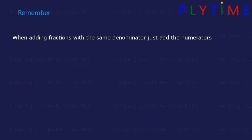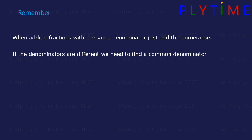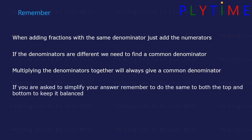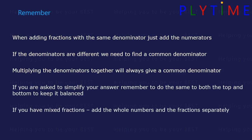Remember, when adding fractions with the same denominator, we just add the numerators. If the denominators are different, we need to find a common denominator. Multiplying the denominators together will always give us a common denominator. If you're asked to simplify your answer, remember to do the same to both the top and the bottom of the fraction to keep it balanced. And if you have mixed fractions, add the whole numbers and then the fractions separately.